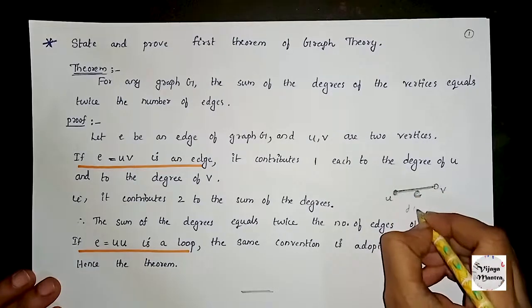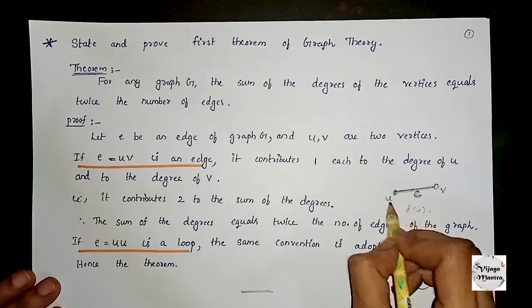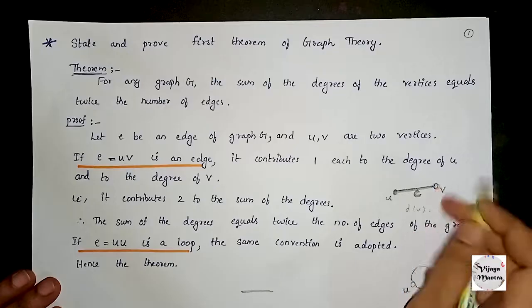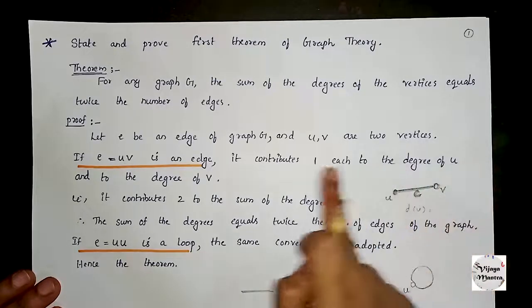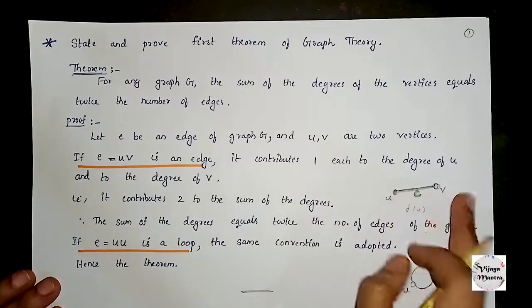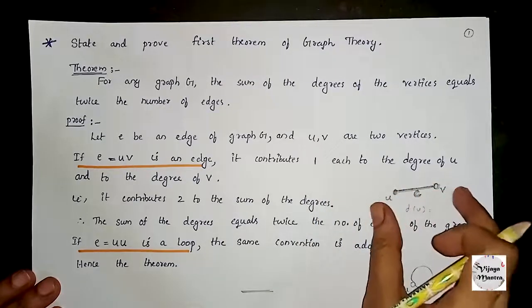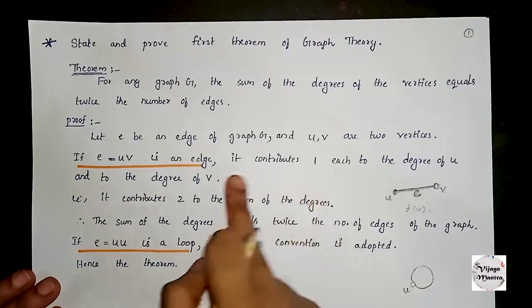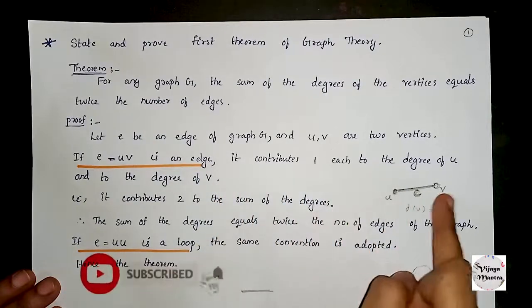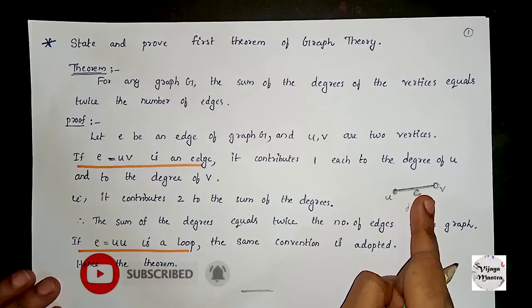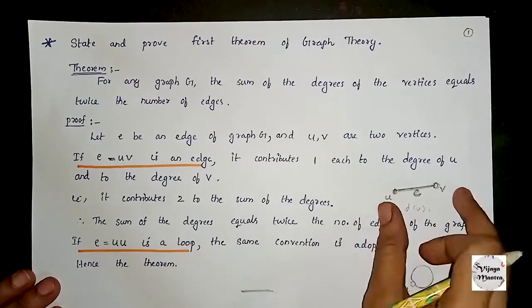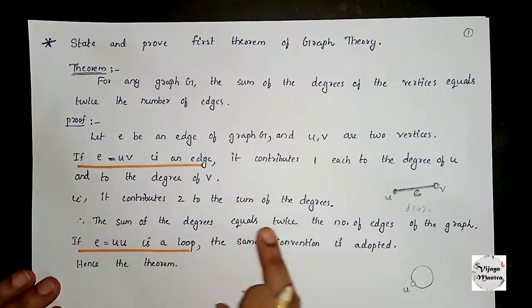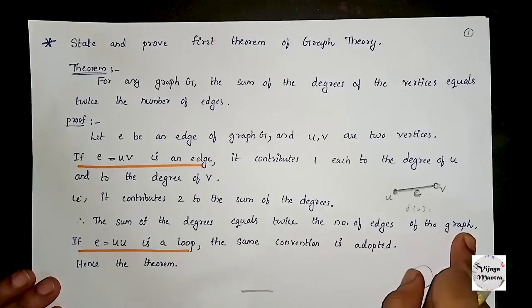In this case, the edge contributes one to the degree of u and one to the degree of v, giving a total contribution of two to the sum of degrees. Therefore, sum of degrees equals twice the number of edges of the graph.